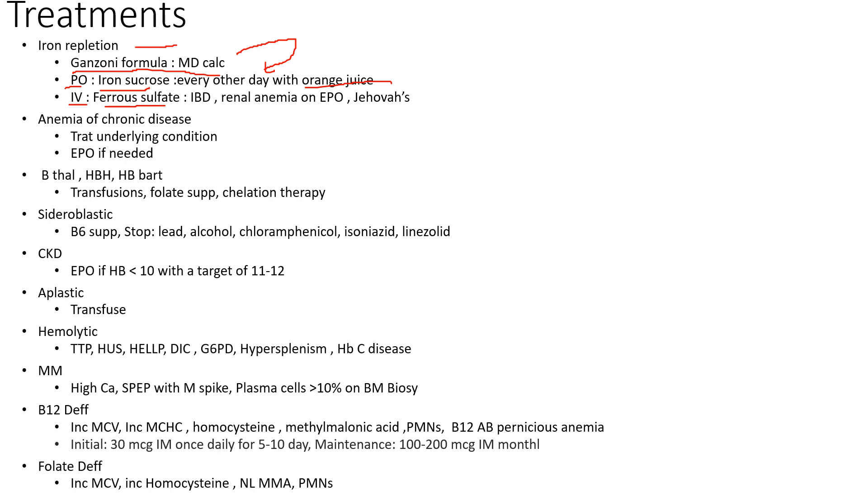Remember that iron is better absorbed with vitamin C, so I like to give these patients orange juice or vitamin C supplement on top of this to help them absorb the iron. And IV iron usually is used for people with gastric problems—IBD, renal anemias on EPO, Jehovah's Witnesses. In these cases you want to replete iron faster. For renal deficiency I would definitely want to replete iron a little more aggressively. IBD you can't give the PO iron because it's going to irritate the gut. And Jehovah's Witnesses, you also want to replete the iron as fast as possible because you cannot transfuse these people.